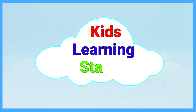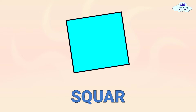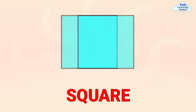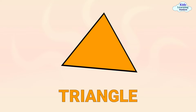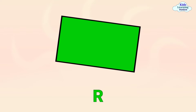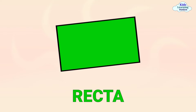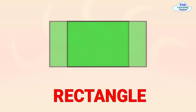Kids Learning Station shapes flashcards and spelling. Square: s q u a r e, square. Triangle: t r i a n g l e, triangle. Rectangle: r e c t a n g l e, rectangle.